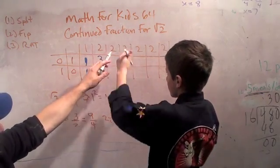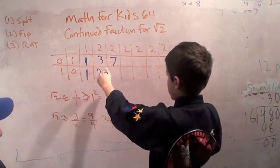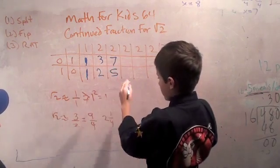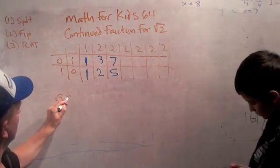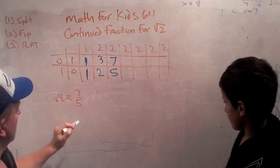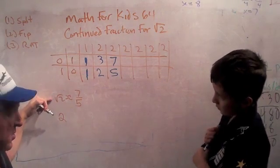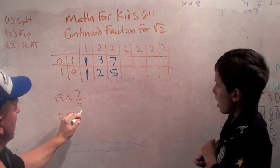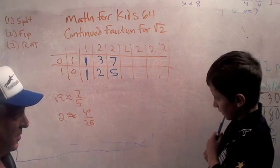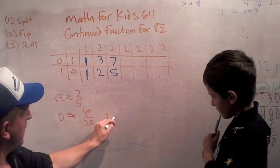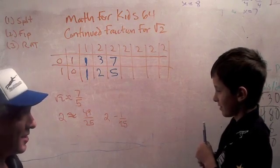Let's get an even better approximation. 6 plus 1 is 7, and 2 times 2 plus 1 is 5. So we get 7 fifths. Let's see if that's a good approximation to the square root of 2. When I square 7 fifths, I get 49 over 25. Is that very close to 2? Yes — in fact, it's 2 minus 1 twenty-fifth. That's our best approximation yet.